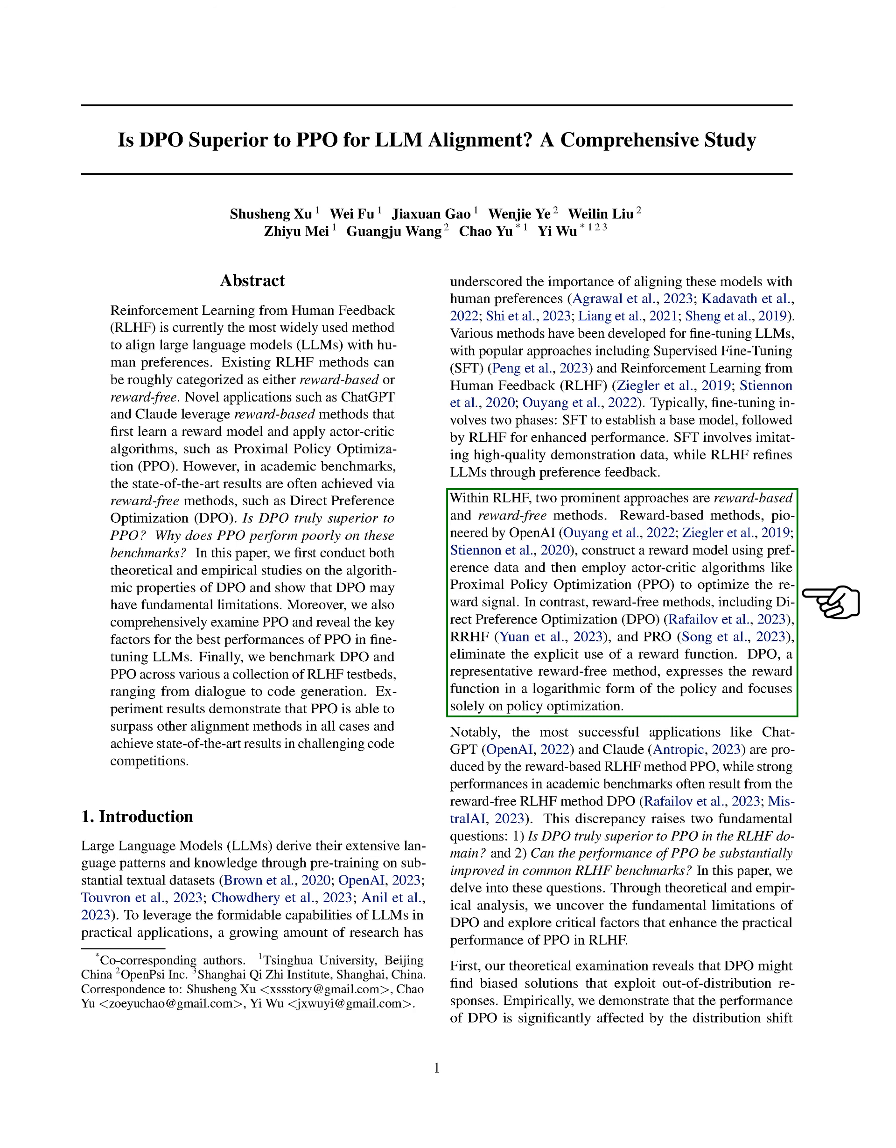On the other hand, reward-free methods like Direct Preference Optimization, DPO, focus on optimizing the model directly without using a reward function.